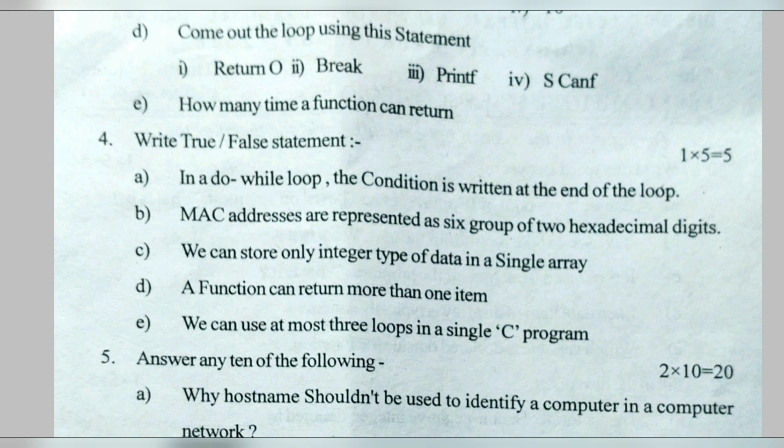A function can return more than one item — false, a function can return only one item. We can use at most three loops in a C program — it is false; we can use as many loops as we want.